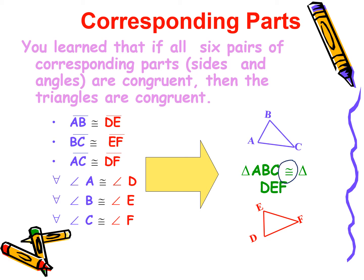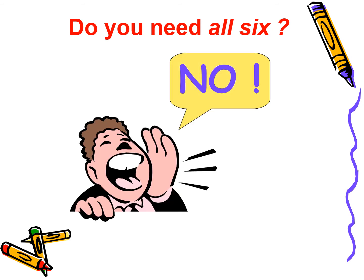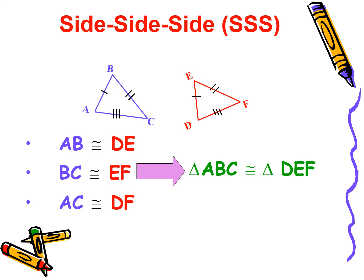Look at the symbol of congruency. Do you need all six to prove congruence? The answer is a big no. It is sufficient to prove any three criteria, as we have already covered in your previous classes.